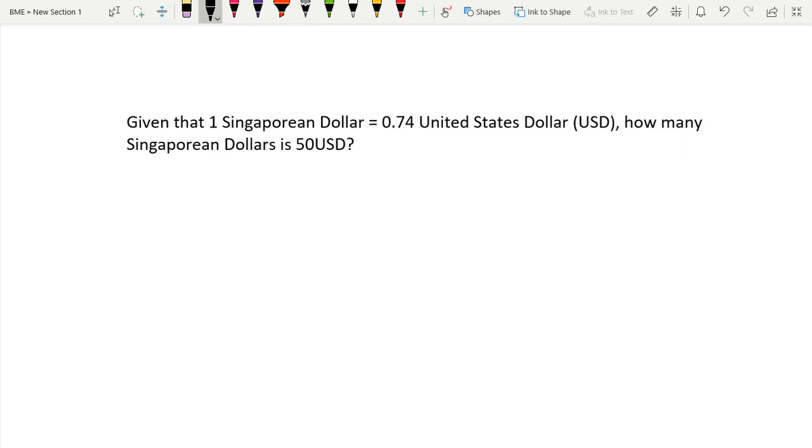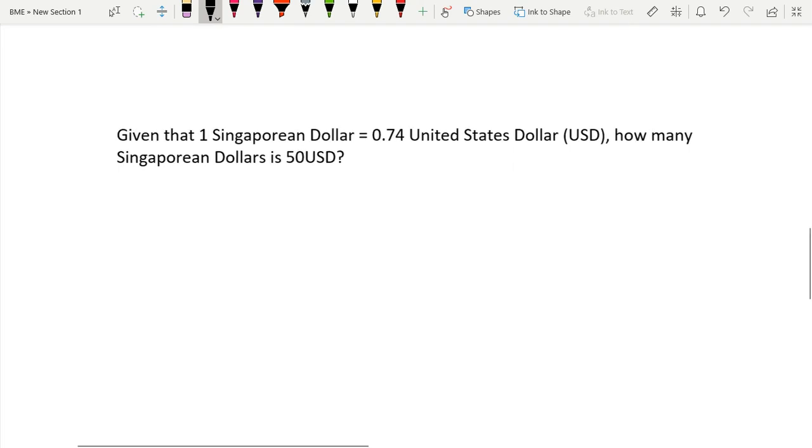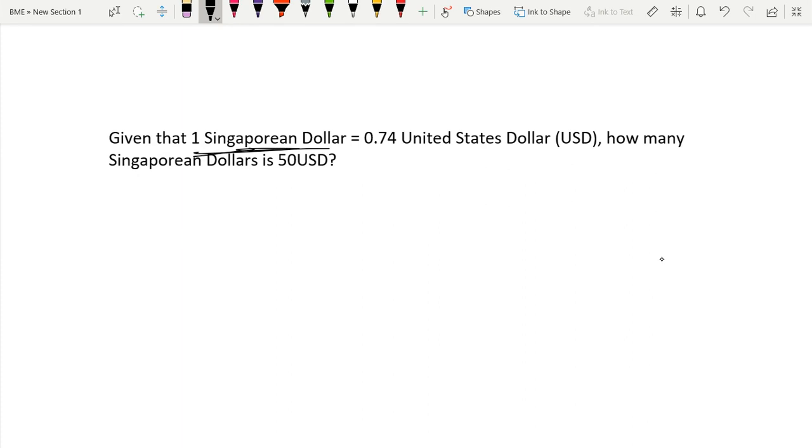Hey guys, what's up? Today we are going to go over solving business problems with currency, in particular currency conversion. We have this problem: given that 1 Singaporean Dollar equals 0.74 United States Dollar, how many Singaporean Dollars is 50 USD? That's just the short form of the United States Dollar.